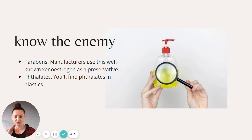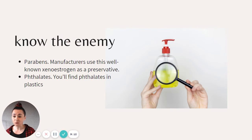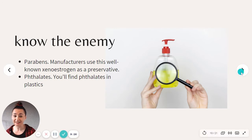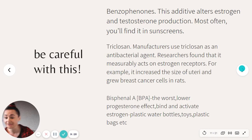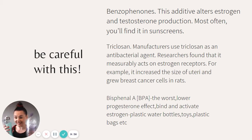Another xenoestrogen found in plastic is phthalates — and if you can't pronounce something, it's so artificial you should probably be avoiding it. Phthalates are found in plastics, meaning plastic water bottles. That's why it's good to switch to glass bottles instead. Be careful with these things.